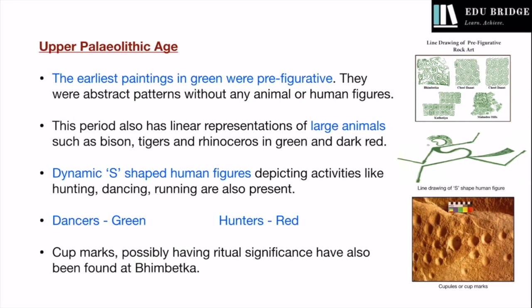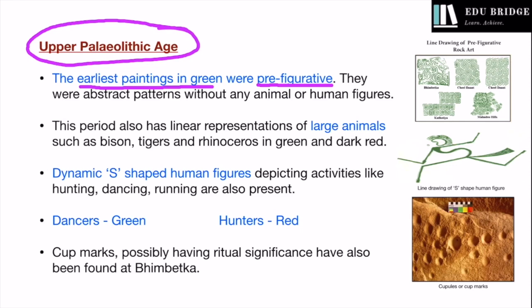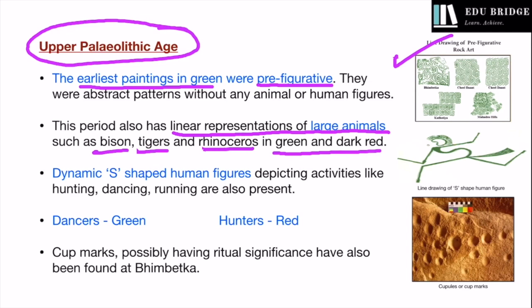Let us now look at the paintings at Bhimbetka belonging to the Upper Paleolithic age. The earliest paintings, made in green, were prefigurative — meaning there are no human or animal figures, only abstract geometric patterns. Subsequently, during the Upper Paleolithic age itself, linear representations of large animals started being made. Large animals such as bisons, tigers, and rhinoceroses were depicted using green and dark red colors. Notably, large animals are shown in large size — large paintings of large animals.